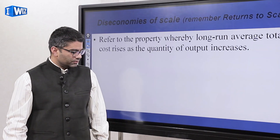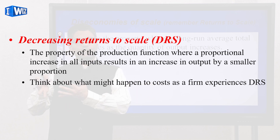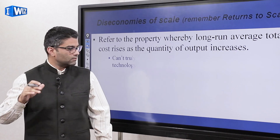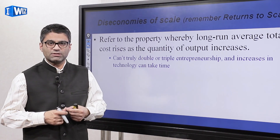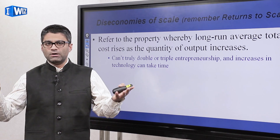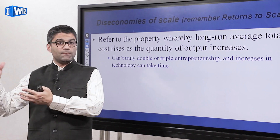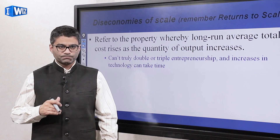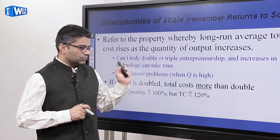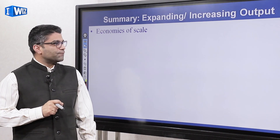The last case is diseconomies of scale, related to decreasing returns to scale, where hiring more inputs makes them less productive. When inputs are less productive but you're paying them the same as the previous worker, your total costs rise by more, so your average total cost starts rising. This often happens when a company gets very large and becomes hard to manage. For example, a baker who is very efficient running one bakery may struggle to run four locations efficiently. If you increase quantity by 100%, total costs rise by more than 100%, so ATC rises.